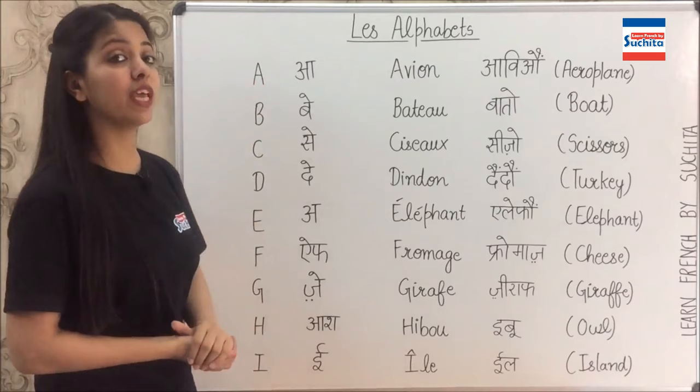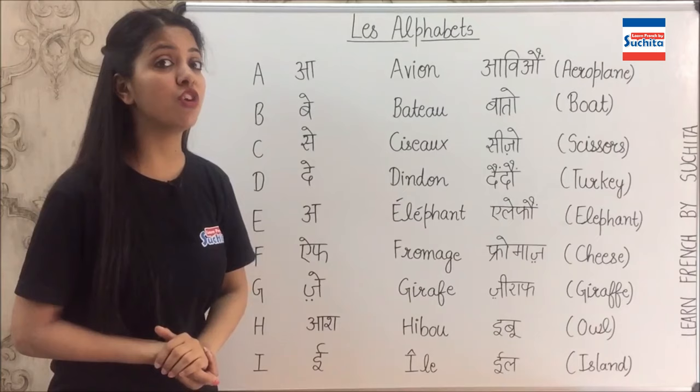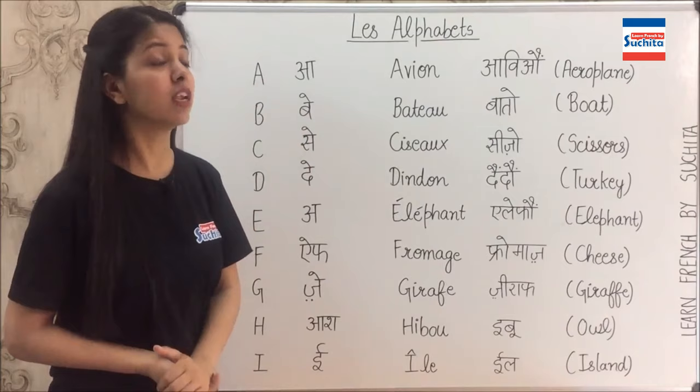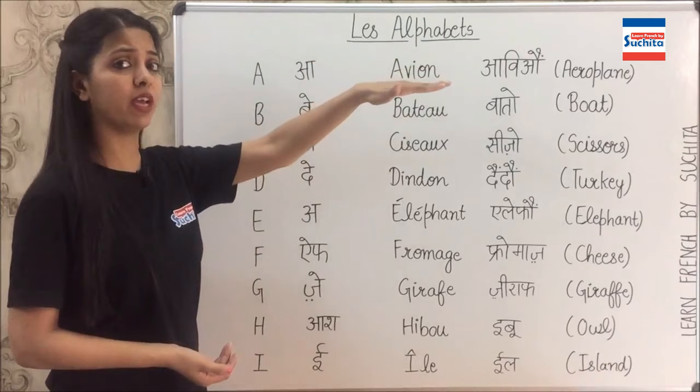So let's start with A. What do we call A in French? That is A — the pronunciation is A. Now, a word starting with A is avion. The word avion means aeroplane. This is just one word that I have suggested; if you know any other word, you can also write that. So: A, avion, aeroplane.